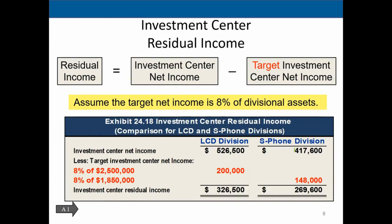The other way we can evaluate this is residual income, which is a completely different form of measurement. Residual income equals investment center net income minus the target investment center net income. Assuming the target is 8% of the division's assets: for LCD, net income is $526,500 minus a target of 8% × $2,500,000 = $200,000, giving residual income of $326,500. For the S Phone, $417,600 minus 8% × $1,850,000 = $148,000, giving residual income of $269,600.